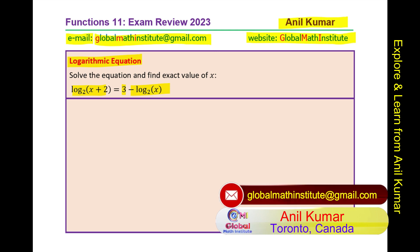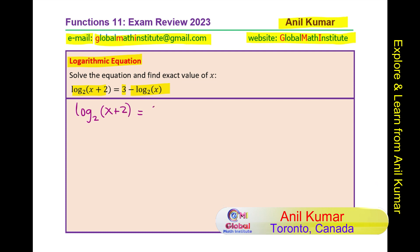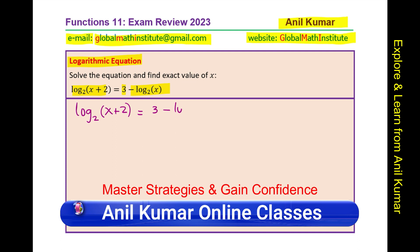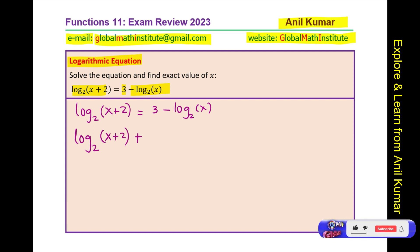Now let us look into the solution of this equation which is log base 2 of x plus 2 equals 3 minus log base 2 of x. Let us bring the log terms together on the left hand side. So we get log base 2 of x plus 2 plus log base 2 of x equals 3.